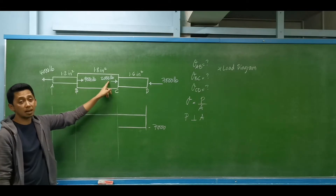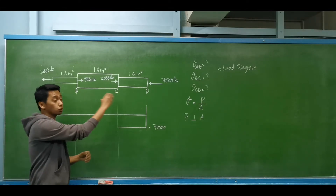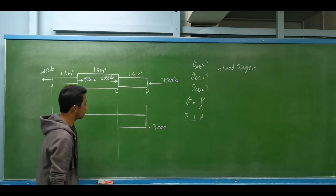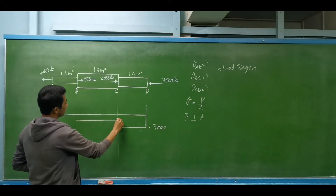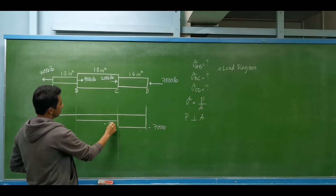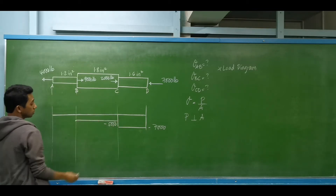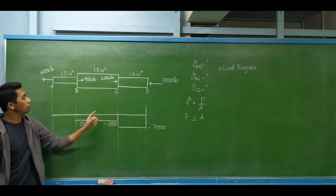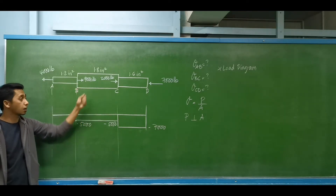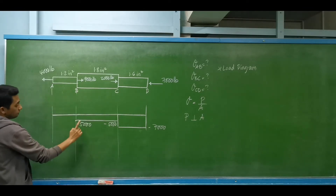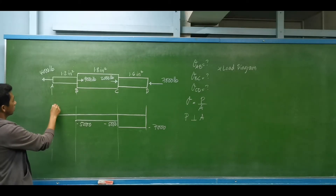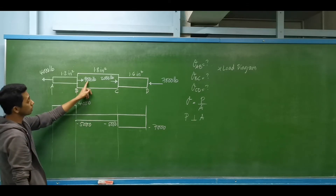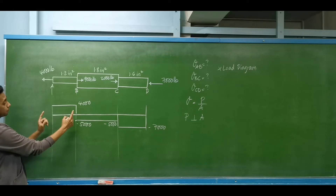At point C, we have an applied force of 2,000 pounds to the right. We do the summation: positive 2,000 plus negative 7,000 gives us negative 5,000. So for segment BC, the axial force is equal to negative 5,000. At point B, we have an applied force of 9,000 to the right. So negative 5,000 plus 9,000 equals positive 4,000. That is for segment AB.